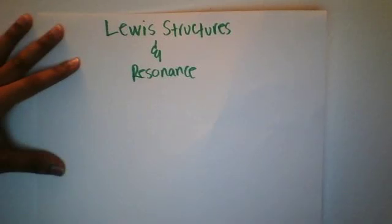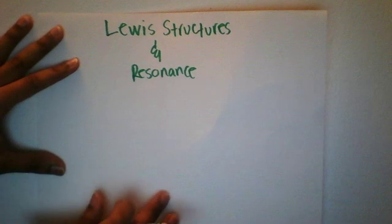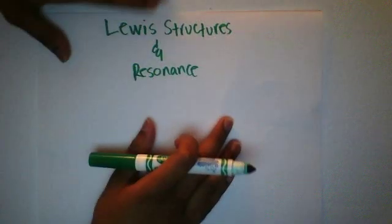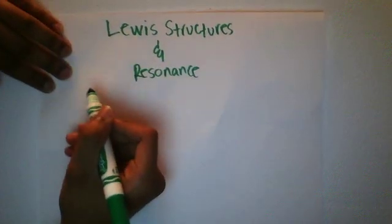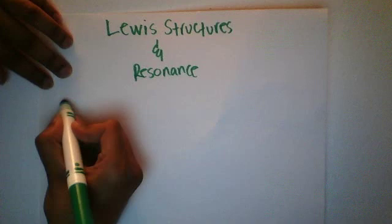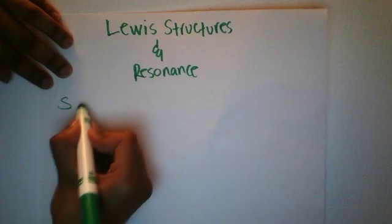In this video we're going to be talking about Lewis structures and resonance structures. Let's start off with drawing the Lewis structure for sulfur dioxide. So the molecule is sulfur dioxide.